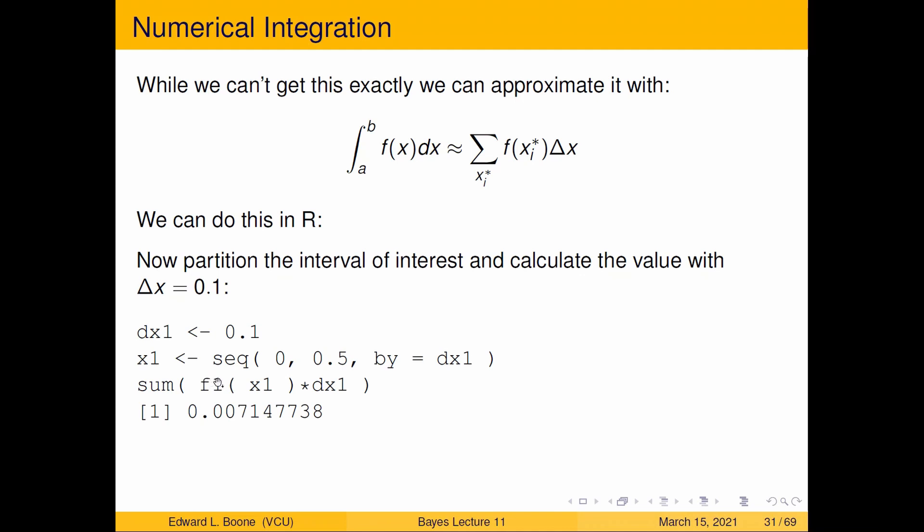Now all I have to do is get the height. So I'm going to take x1 and plug it into f1 and that will give me the height. Here I've got dx1 which is the width. So the height times the width, add them up. And if I do that and plug this into R I'll get 0.00714.